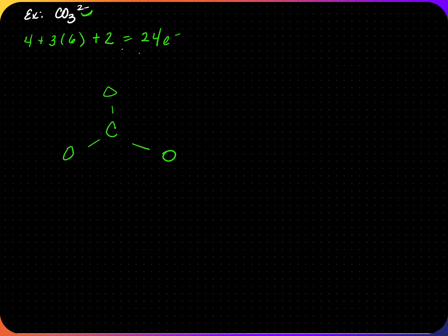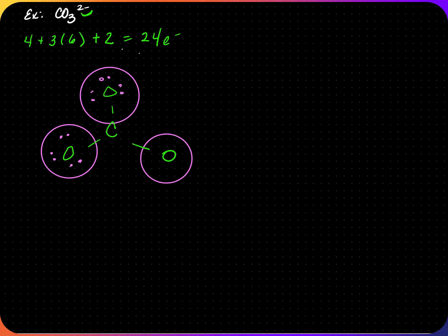We're going to follow the octet rule for each element. Each oxygen has two electrons from the bond, so it needs six more to fulfill the octet rule — three pairs each. Now looking at carbon: carbon has six electrons from the bonded pairs, so it needs two more to fulfill the octet rule.